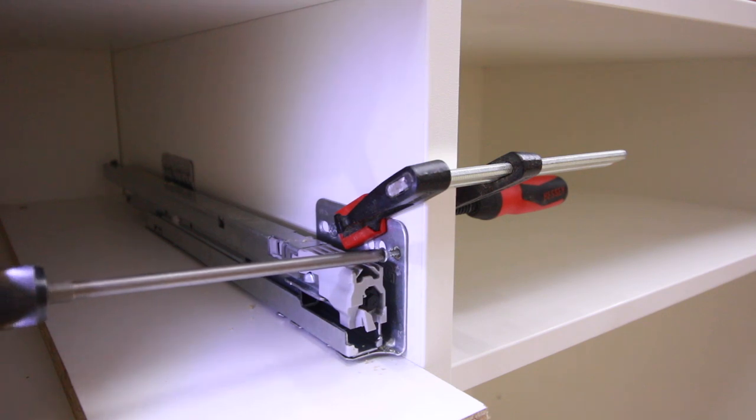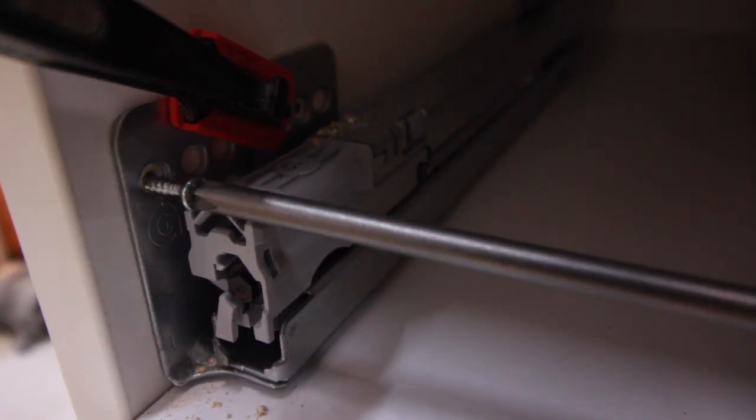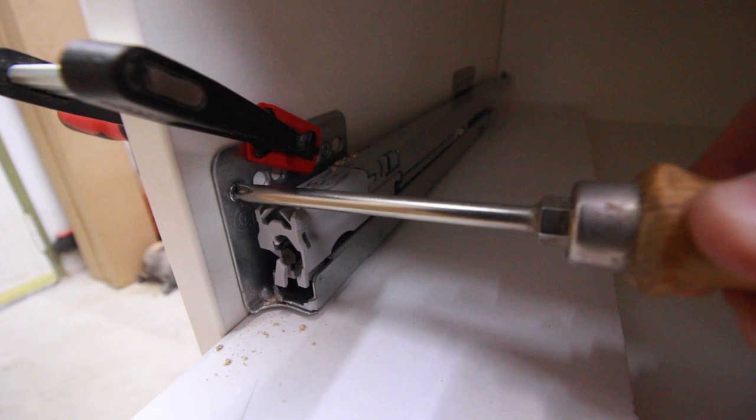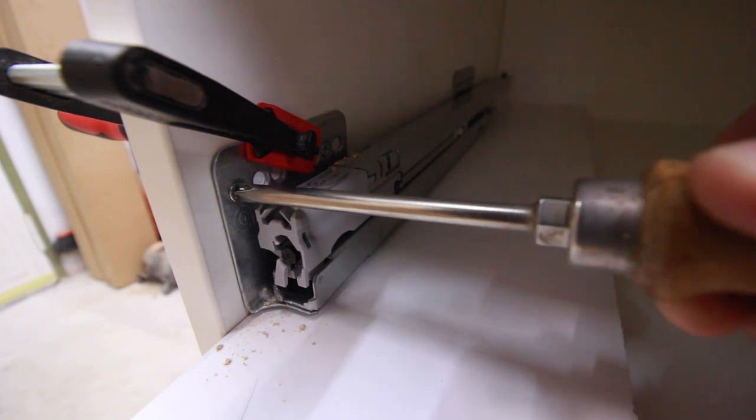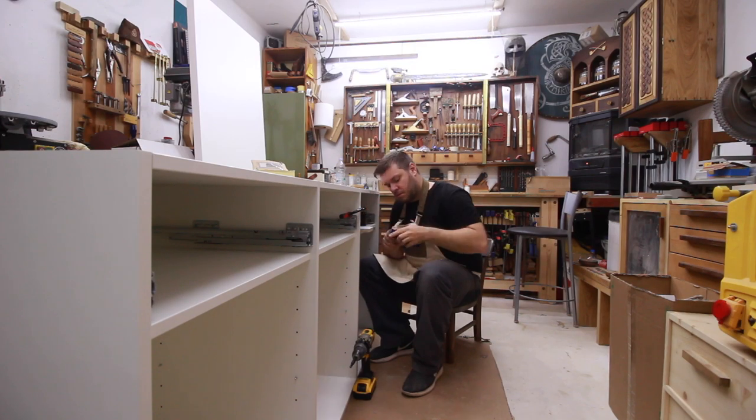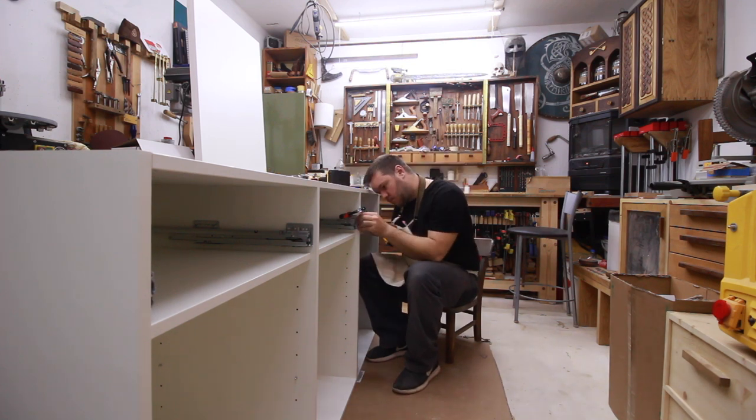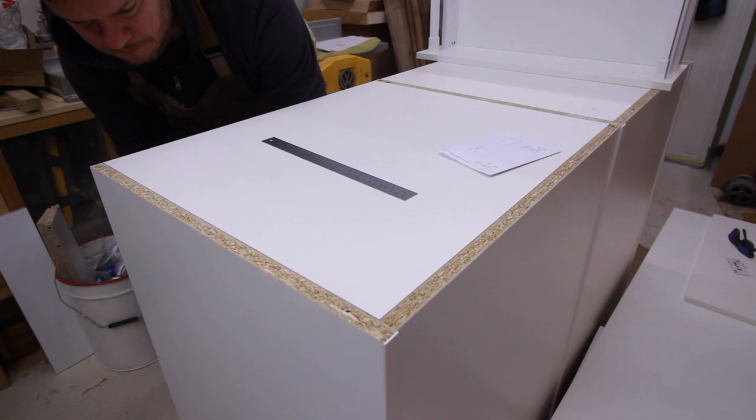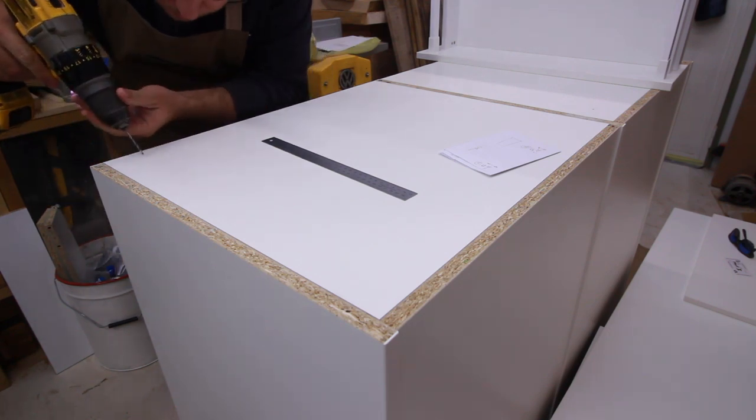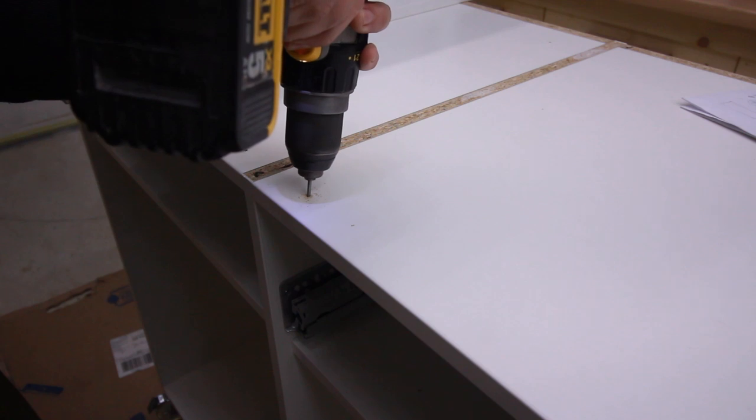Here I'm using drawer slides - soft close, full extension with metal sides. You just basically assemble the drawers. It's really easy to install and they have held up fantastically. After one year of use they work even better than the first day I installed them.